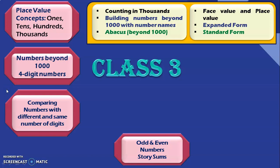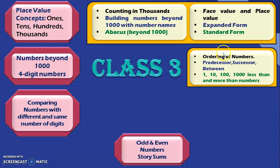Under the topic numbers beyond 1000, we will learn about the ordering of numbers. Next, we will learn to do the predecessor, successor, and between-number concepts — predecessor and successor meaning before and after numbers. Something new we will learn in class 3 is writing 1 less than, 10 less than, 100 less than, and 1000 less than a number. Similarly, 1 more than, 10 more than, 100 more than, and 1000 more than a number.